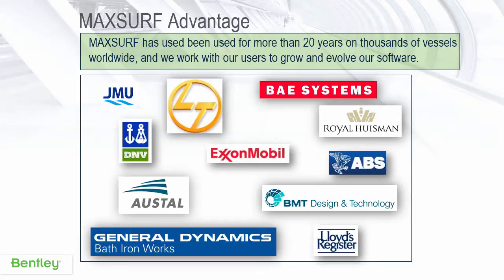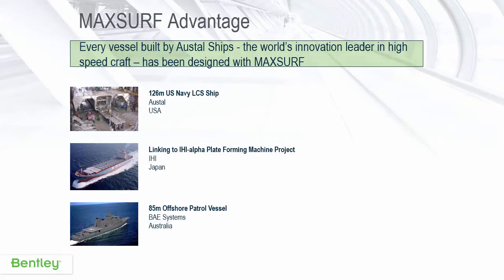MaxSurf is used around the world by a range of companies, from commercial to naval, from steel to aluminium, and from sailing to powered vessels. As one example, every vessel built by Austal Ships, the world's innovation leader in high-speed craft, has been designed with MaxSurf. Other recent projects include IHI container ships and hot patrol vessels designed by BAE Systems.